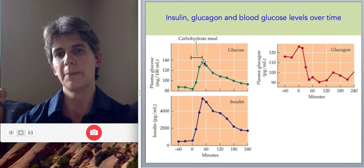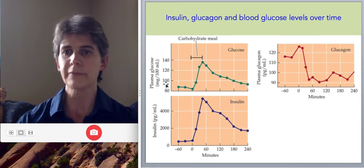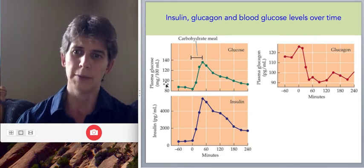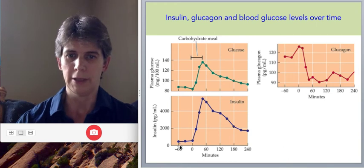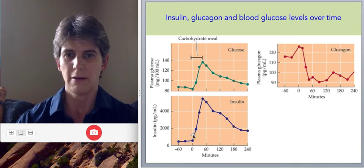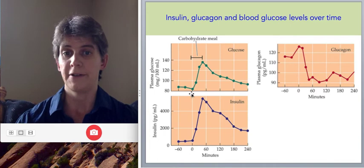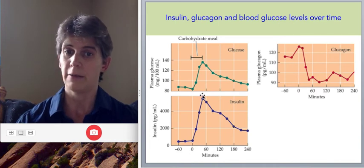And once the glucose level is over about 100 milligrams per deciliter, then insulin will be released. So you can see here the response of insulin right after glucose goes up, insulin's following it, right?